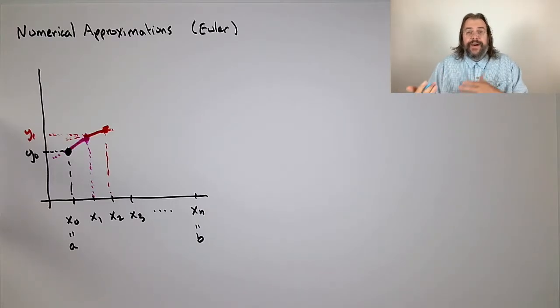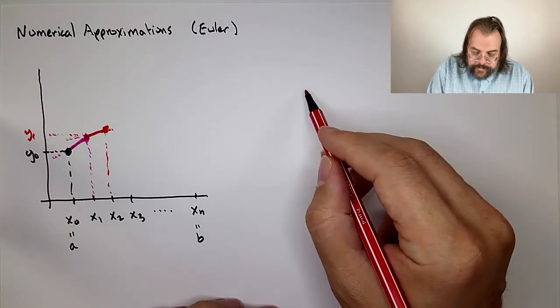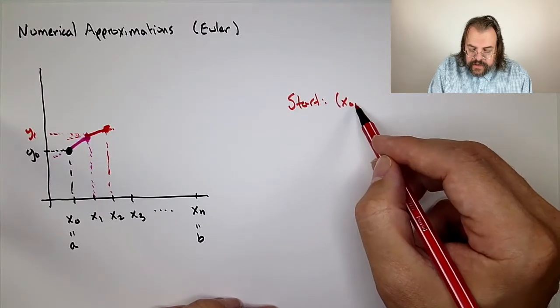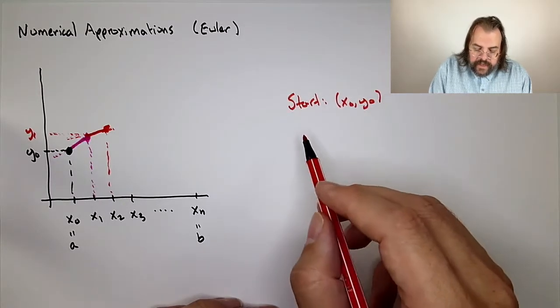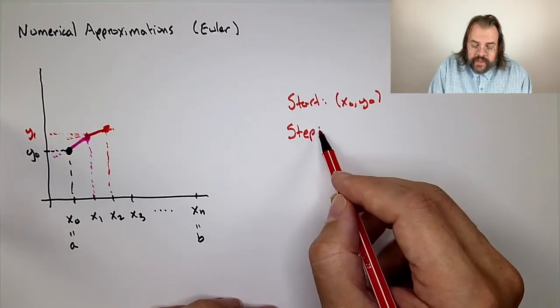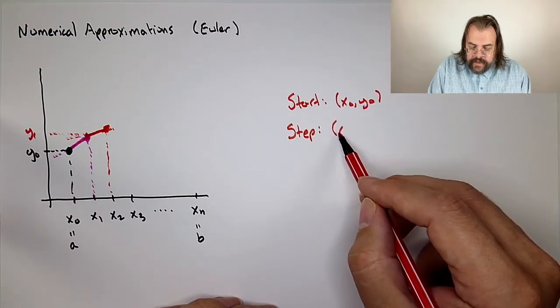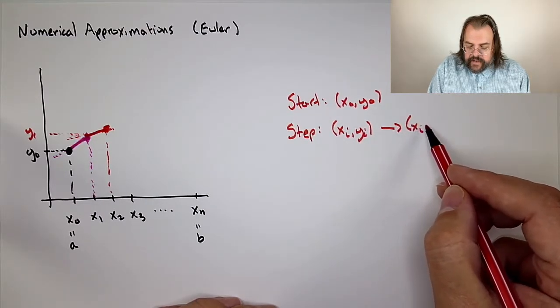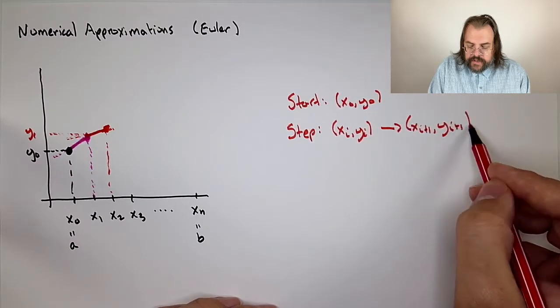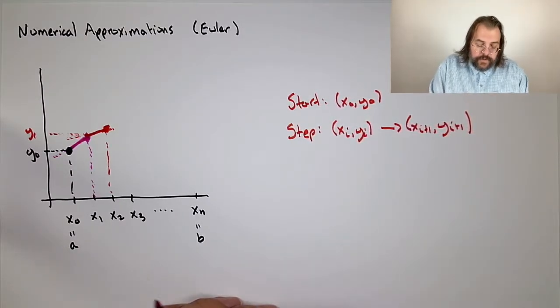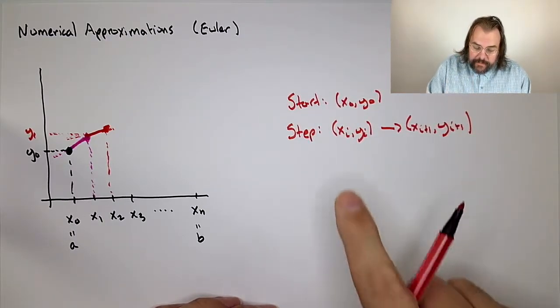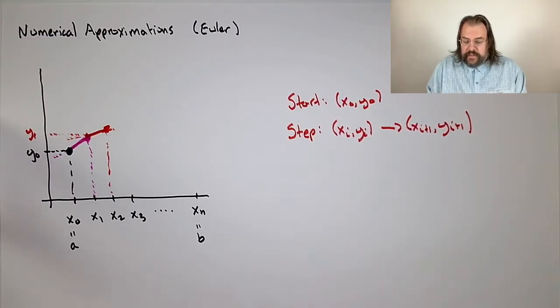So how does it work? The idea is we have a start, which is at an x₀, y₀, and then we have a step. The goal of the step is how do I go from some pair xᵢ, yᵢ to the next point xᵢ₊₁, yᵢ₊₁. We have a point and we say, here's this xᵢ, yᵢ. This is a point on our tangent line.